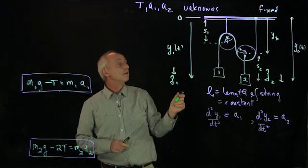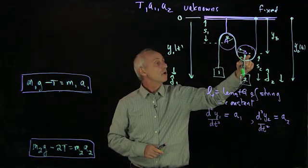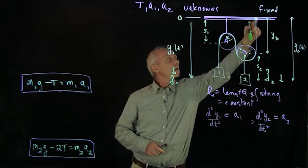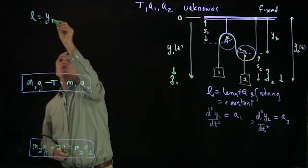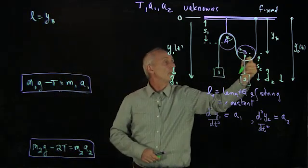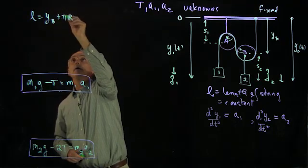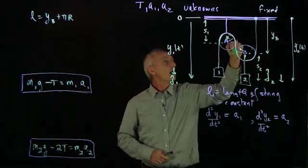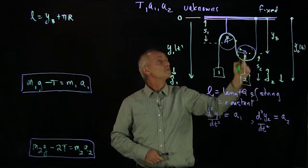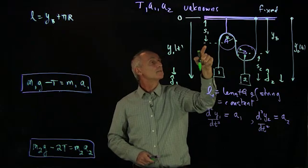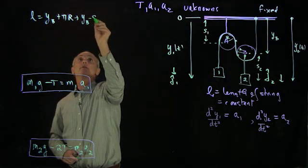The length of the string is y_b going down here. So the length of the string has a factor y_b. It wraps around pulley b, so that's pi r. And it goes up to this length here. Now this length is y_b minus s1. So that's y_b minus s1.